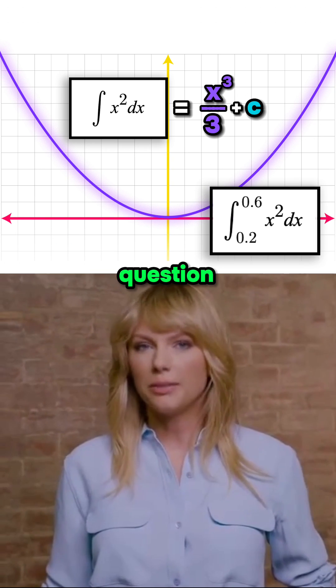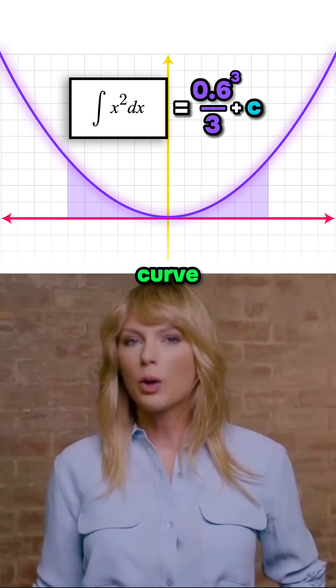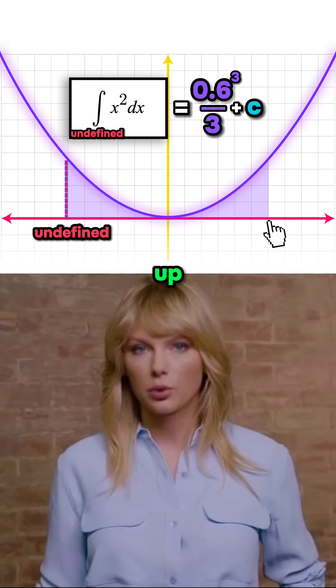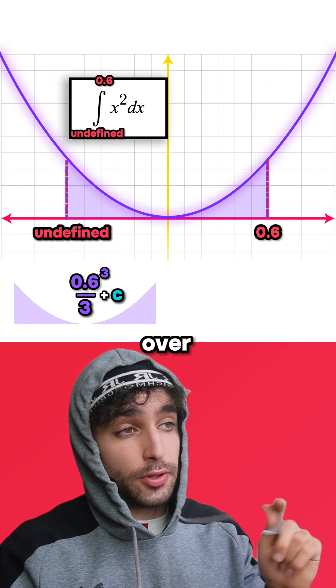Yeah, so looking at our question, 0.6 is the upper limit and if we plug that where x is, we get the area under the curve from an undefined point up to where x is 0.6. So the area is 0.6 cubed over 3 plus c.